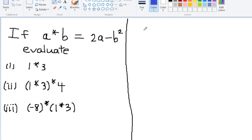We are given a binary operation: a star b is equal to 2 multiplied by a minus b to the power 2. We are asked to evaluate 1 star 3.